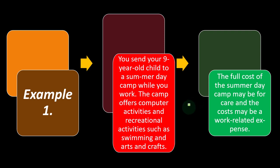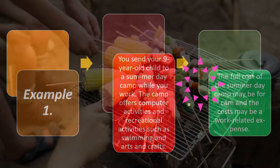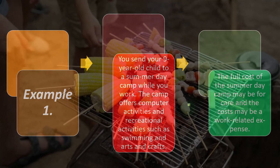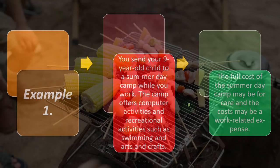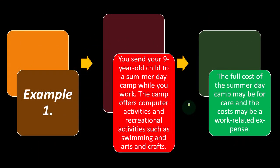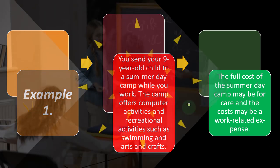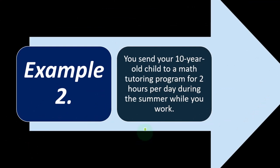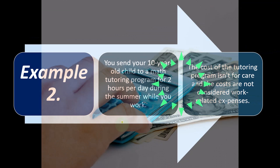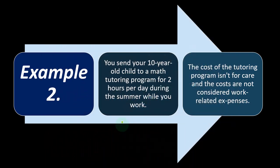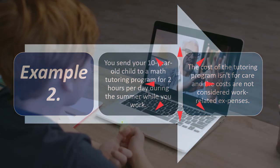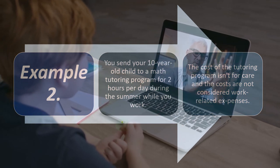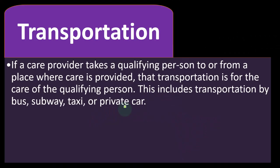It gets a bit messy because you don't want the primary purpose to appear as anything other than care. If the other activities are not the primary purpose and care is, you may be able to claim the credit. For example two, you send your 10-year-old child to a math tutoring program for 10 hours per day during the summer while you work. The cost of the tutoring program isn't for care and isn't a work-related expense, because the primary purpose is tutoring rather than enabling you to work.